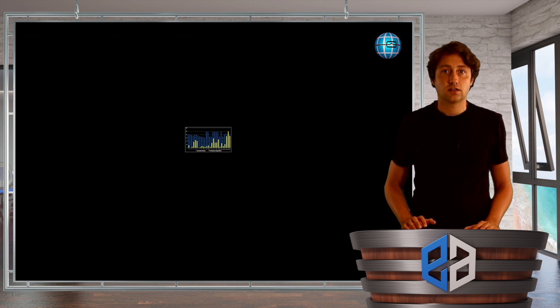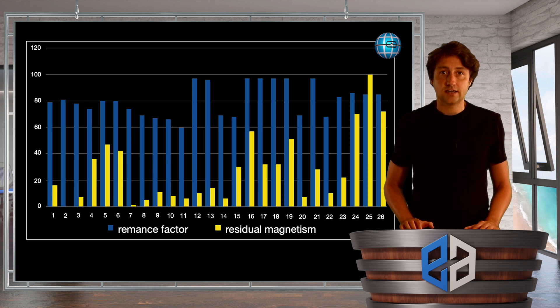And as an example we get a picture like this where in about half of the current transformer cores that we studied we measured a significant amount of residual magnetism.